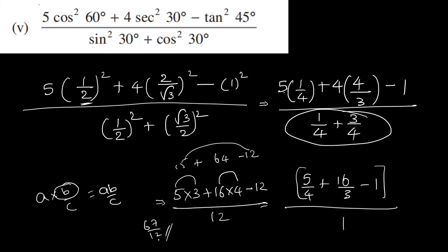67 by 12 is the answer. Just simplification: first step, second step, third step, fourth step, last final step.